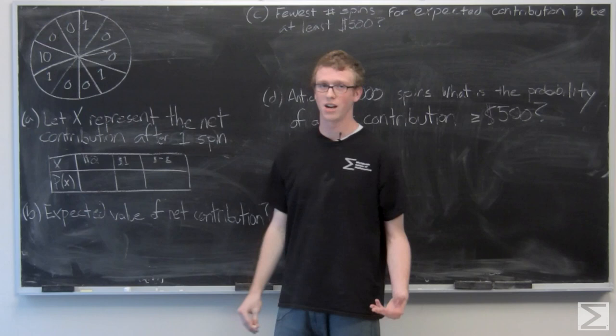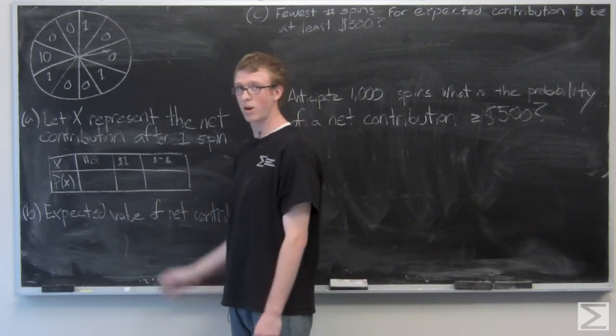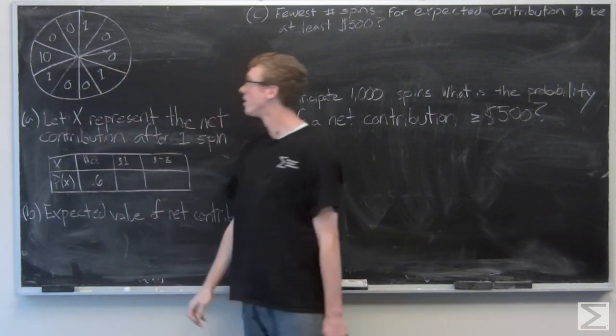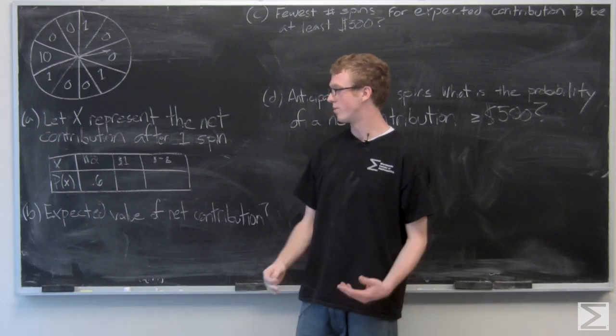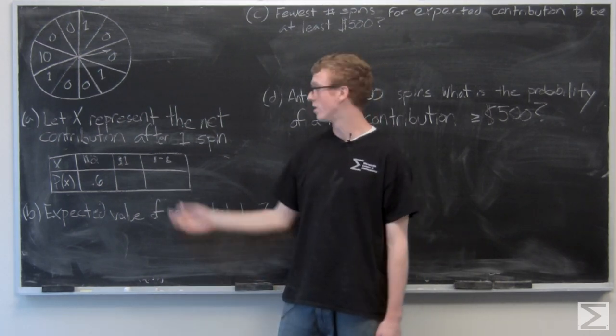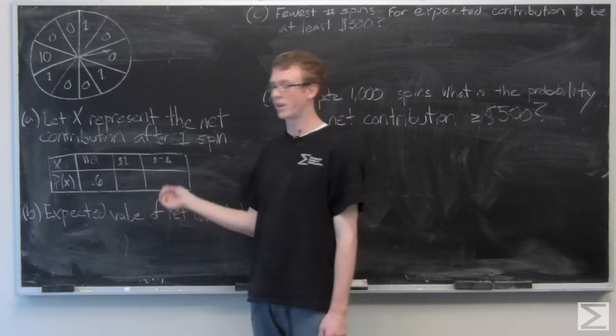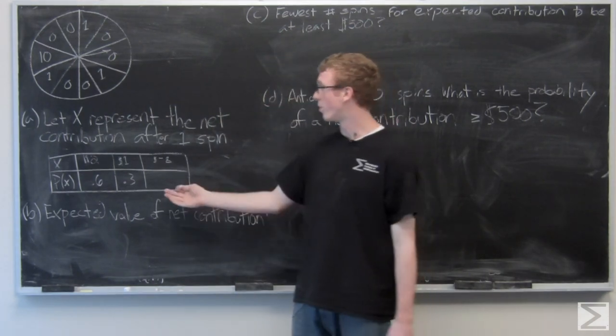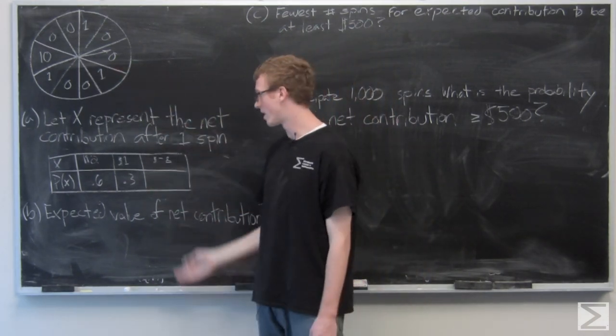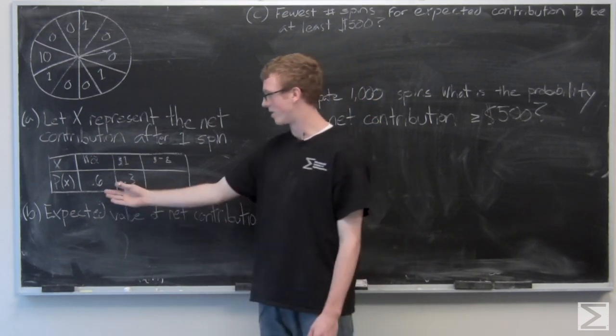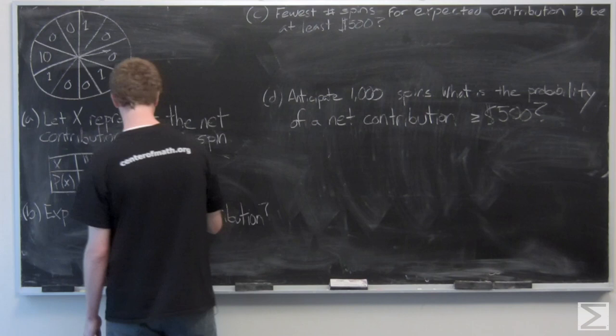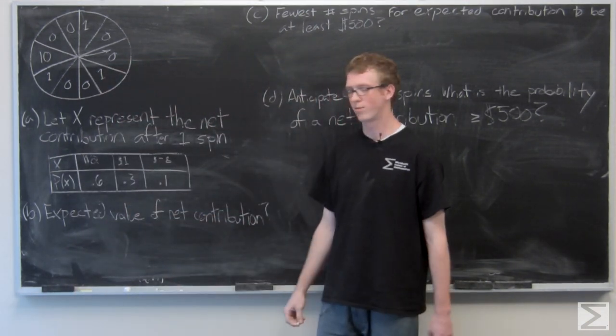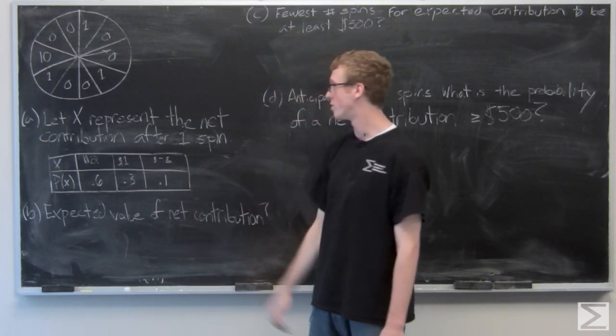So since there's six out of 10 spots with a zero, and they all have equal likelihood, the probability of two is going to be 0.6. Since there's three spots with a one, the expected contribution is one, and the probability of that is going to be 0.3. And then we're left with 0.1. One out of 10 spots is going to get us negative eight, and it also completes the probability adding up to one. So fairly simply, we've completed the table of probabilities for X, the net contribution after one spin.